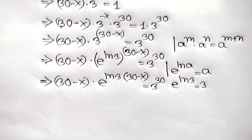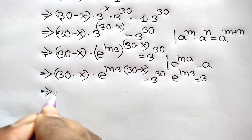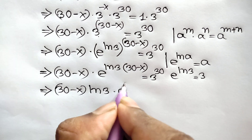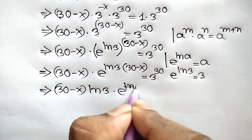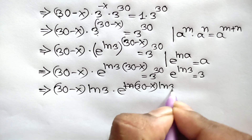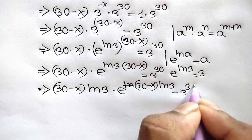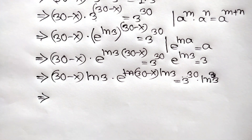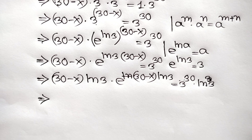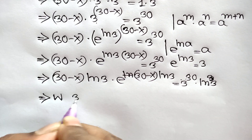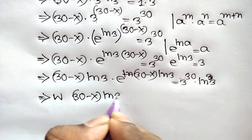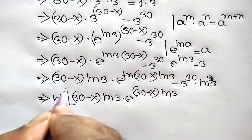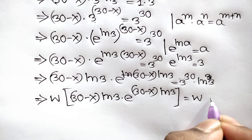Multiplying both sides by ln of 3, we get 30 minus x times ln of 3 times e to the power 30 minus x times ln of 3 is equal to 3 to the power 30 times ln of 3.